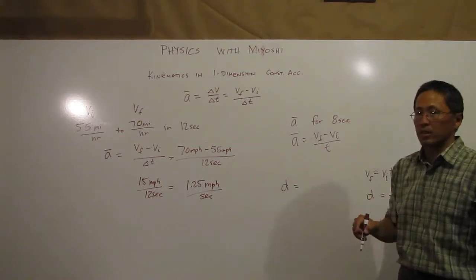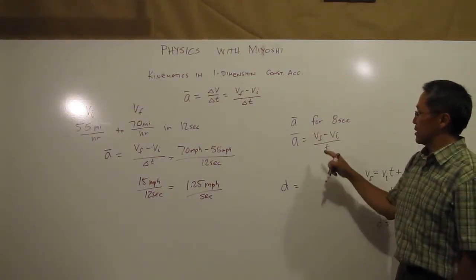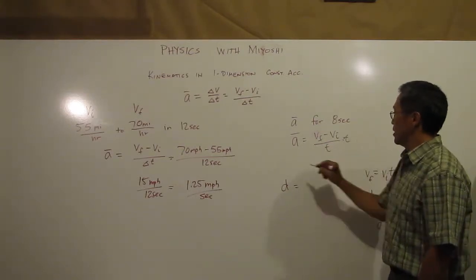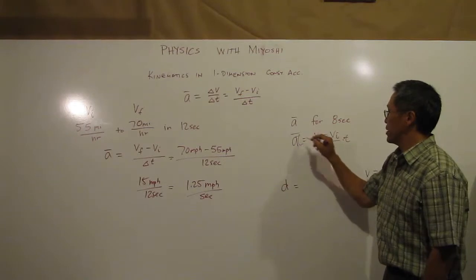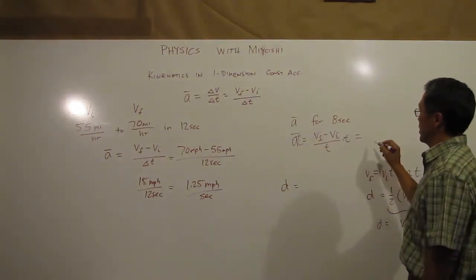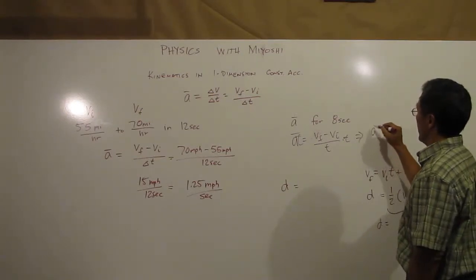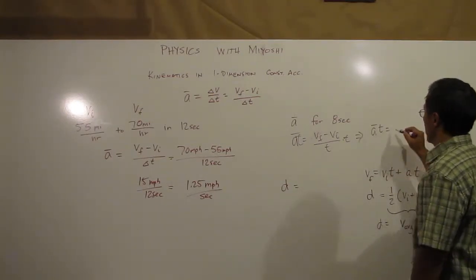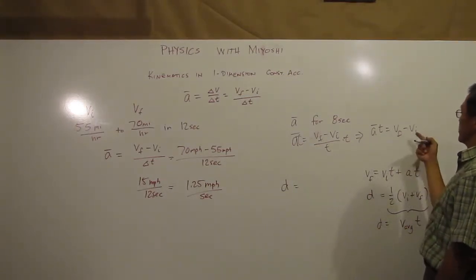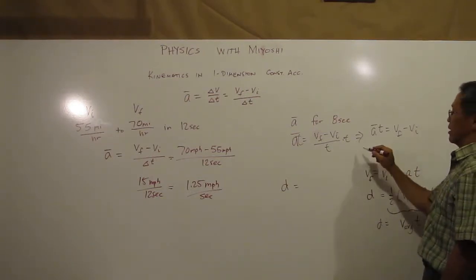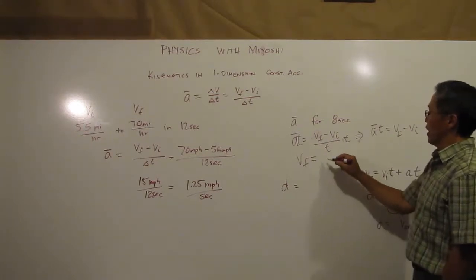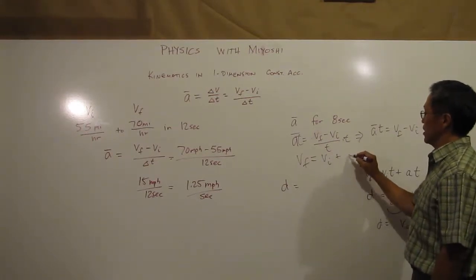So let's rearrange this equation to find the final velocity all by itself. So if I just multiply it by T, I'll put the T over there, and then I can add. Then this will give me A T is V final minus V initial, and I can then add in the V initial and I can have an equation that looks like V final is equal to V initial plus A T.